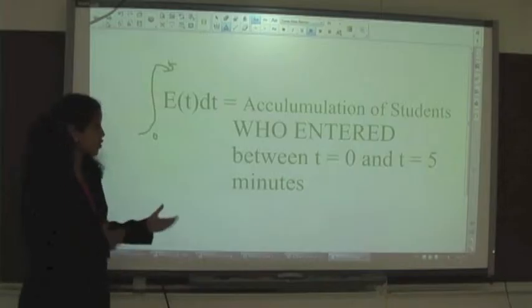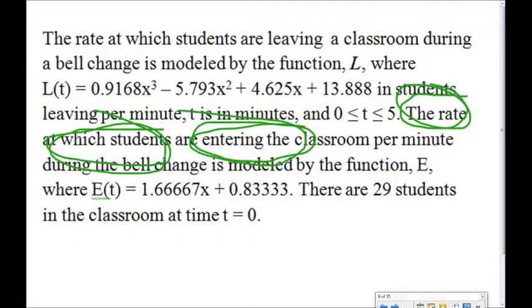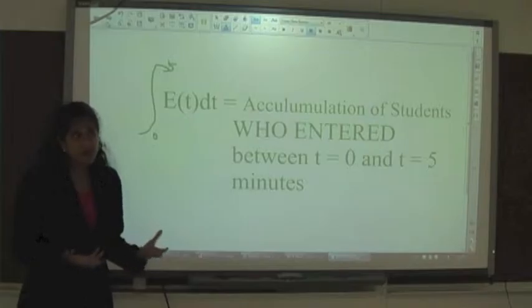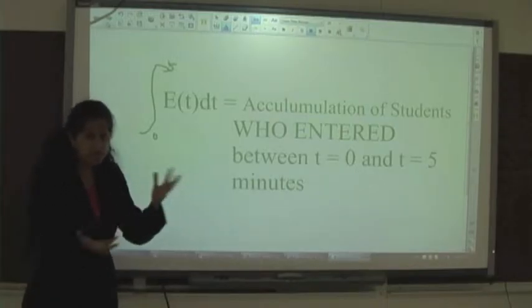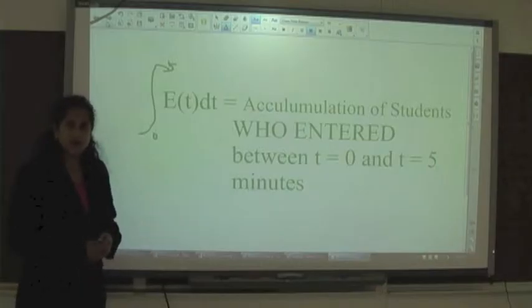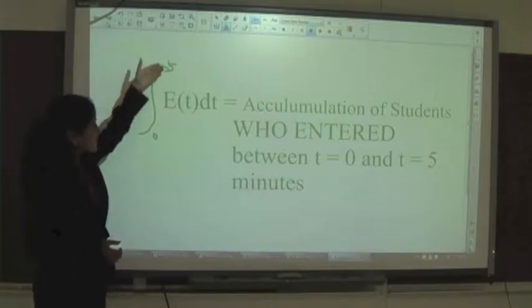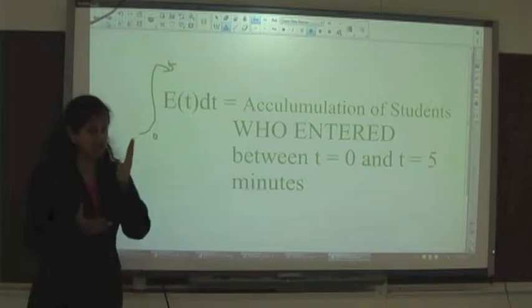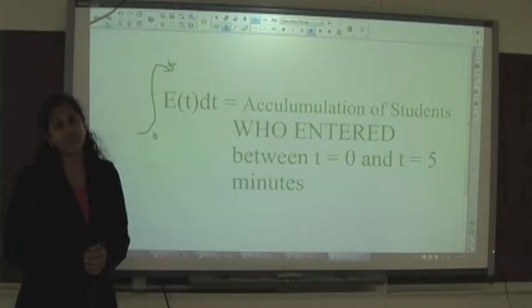E of T represented the students entering my classroom. When the bell rings, not a lot of people are coming in at the very beginning — maybe a few trickle in within the first minute, but it's not until minutes two, three, four where you start seeing a bunch of people coming in. So we know the anti-derivative from zero to five of E of T tells me how many people entered in that five minutes, from when the bell rang to when the bell rang again signifying fourth period has begun.